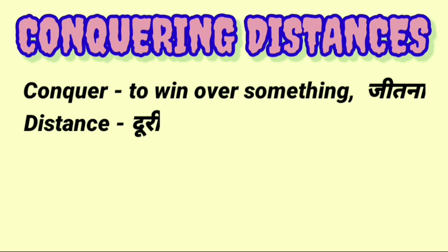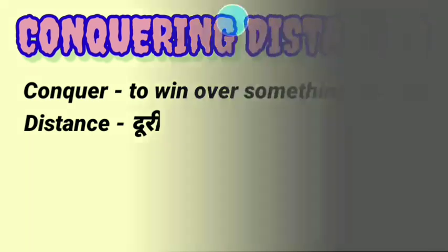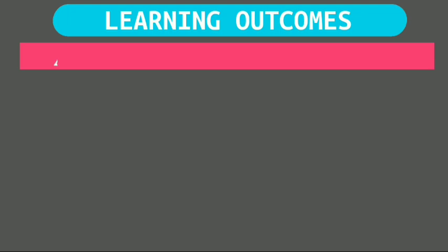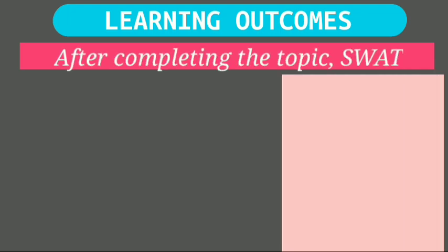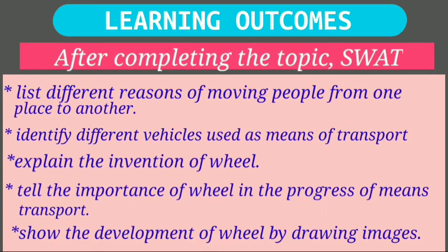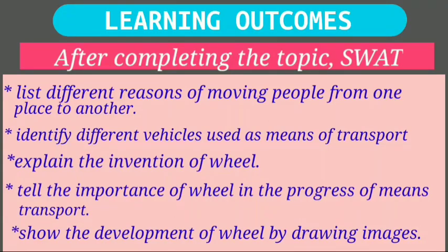But before that, let's have a look at the learning outcomes. After completing the topic, you will be able to: list different reasons for people moving from one place to another; identify different vehicles used as means of transport; explain the invention of the wheel; tell the importance of the wheel in the progress of means of transport; and show the development of the wheel by drawing images.